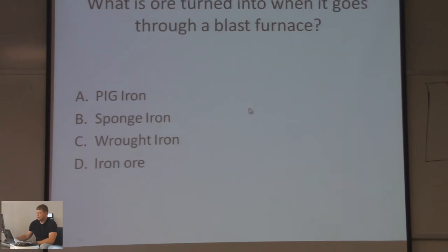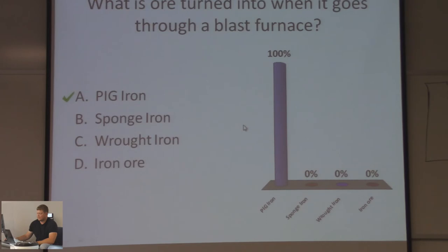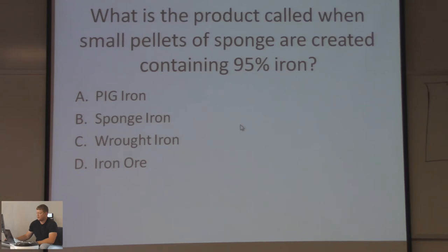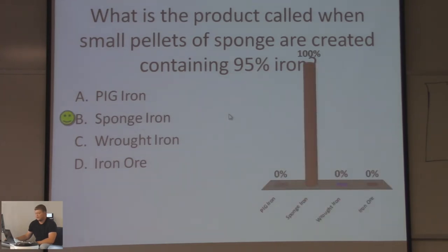What is ore turned into when it goes through a blast furnace? Pig iron, sponge iron, wrought iron, or iron ore? What is the product called when small pellets of sponge are created containing 95% iron? If you chose sponge iron, you are 100% correct. It is sponge iron — it contains 95% iron and it's in small pellets of sponge.